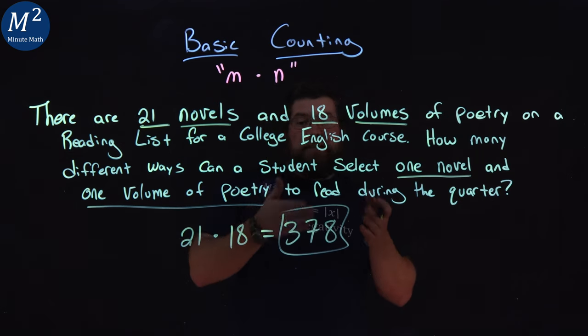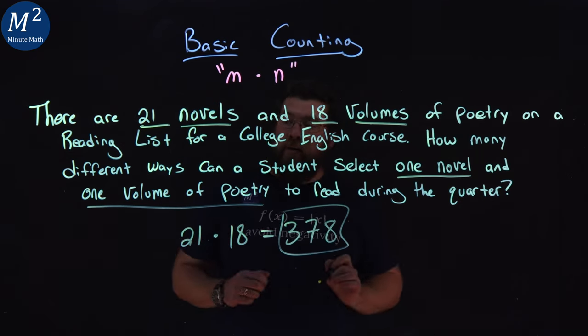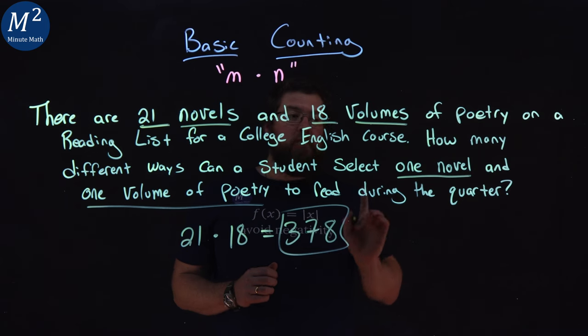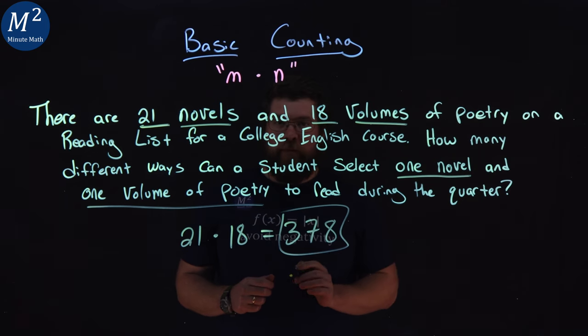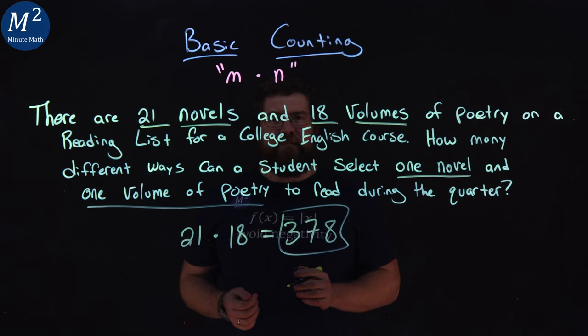There are 378 different ways to select one novel and one volume of poetry to read during the quarter. I hope you learned something here about basic counting, and as always, thanks for watching.